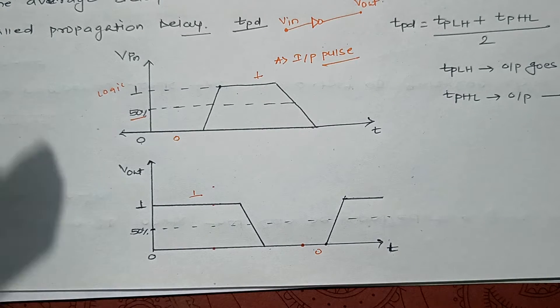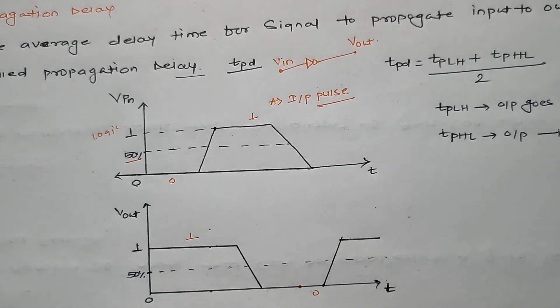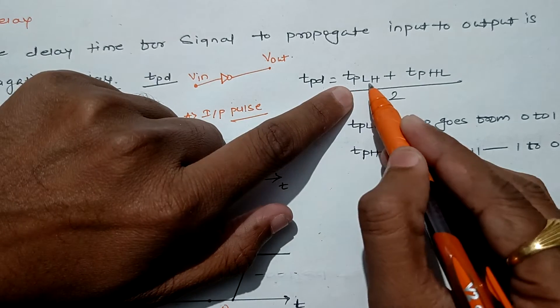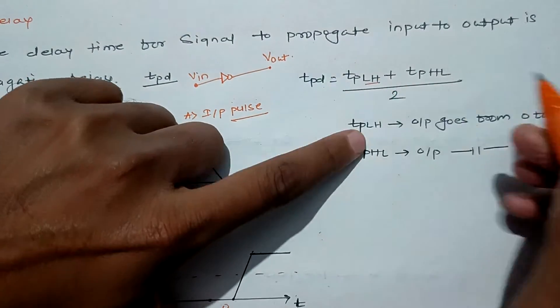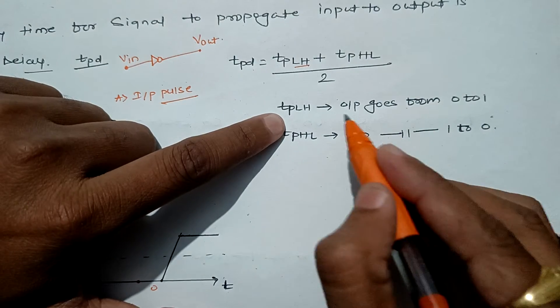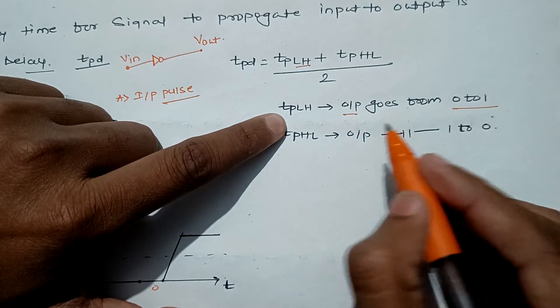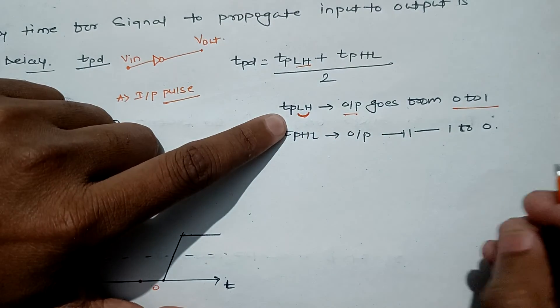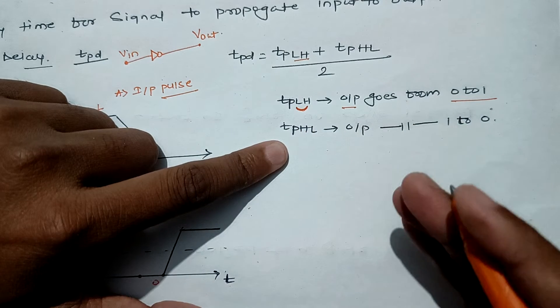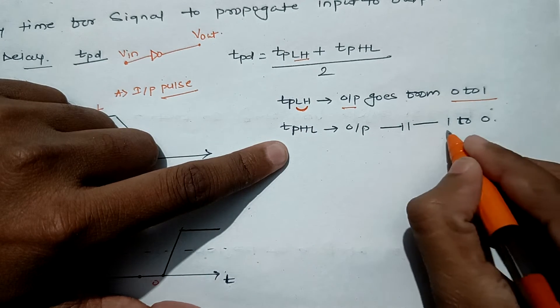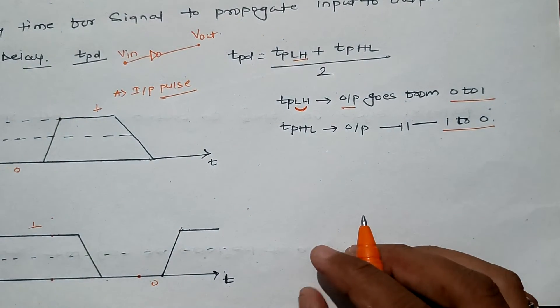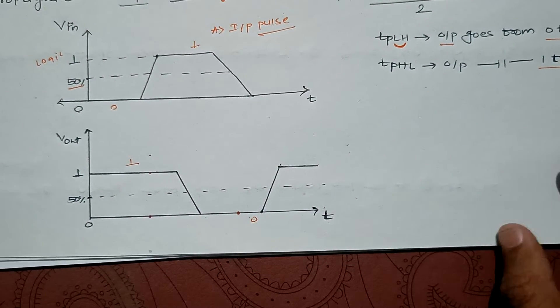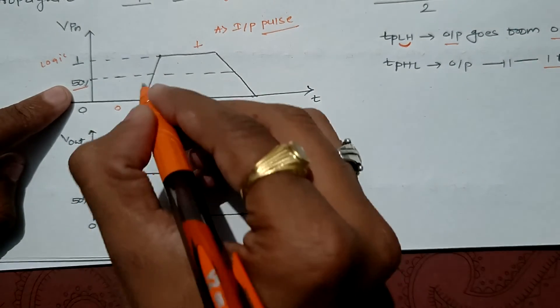The propagation delay is basically an average of tpLH and tpHL. tpLH is the average time taken by output to go from 0 to 1, and tpHL is the average time when output goes from high to low.